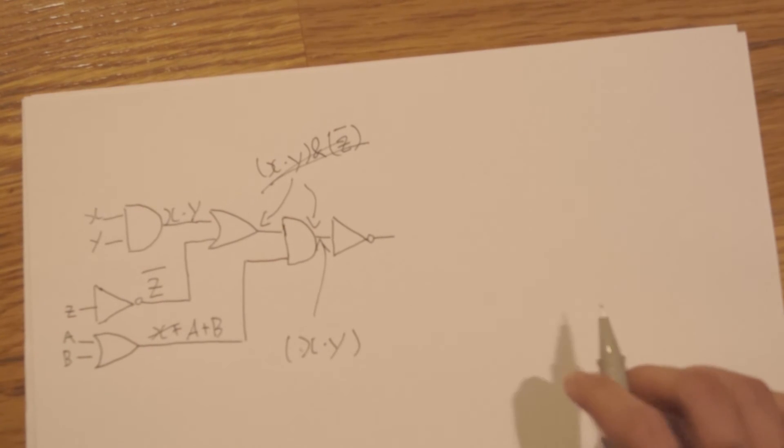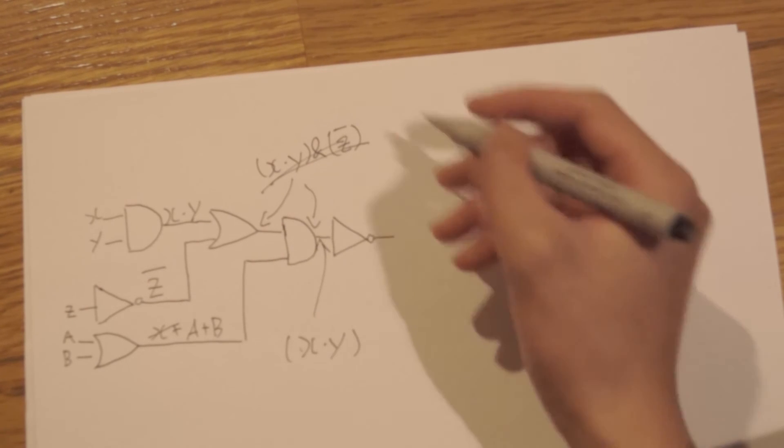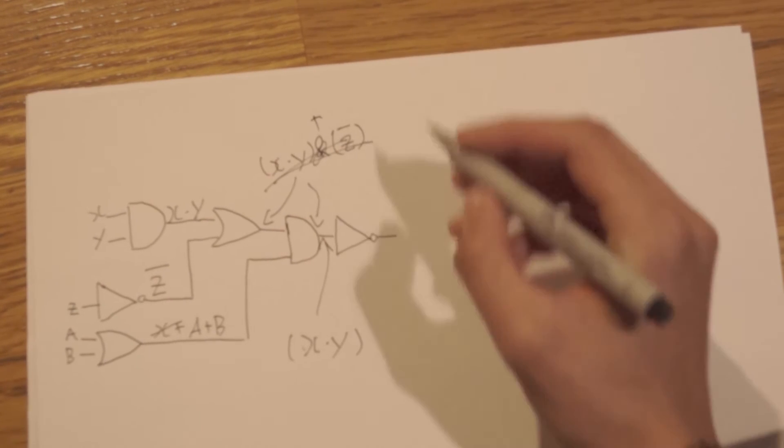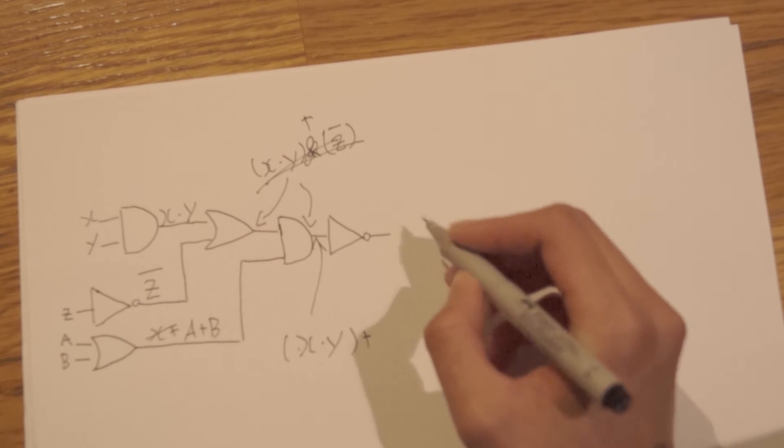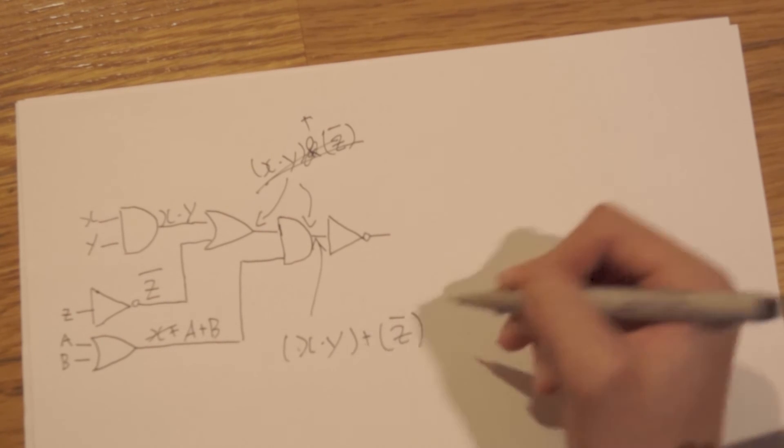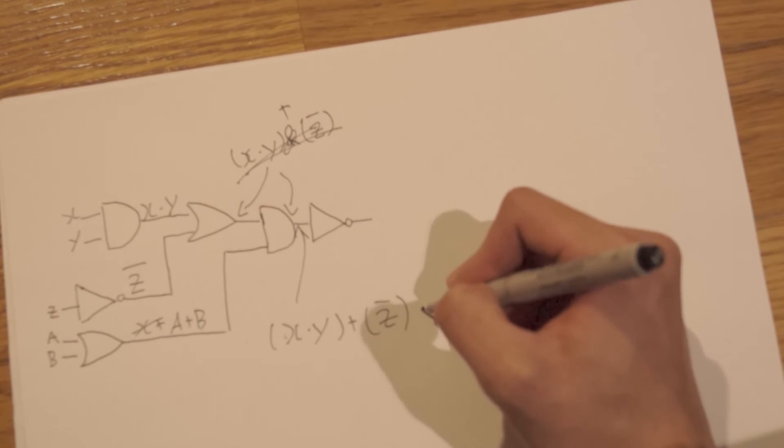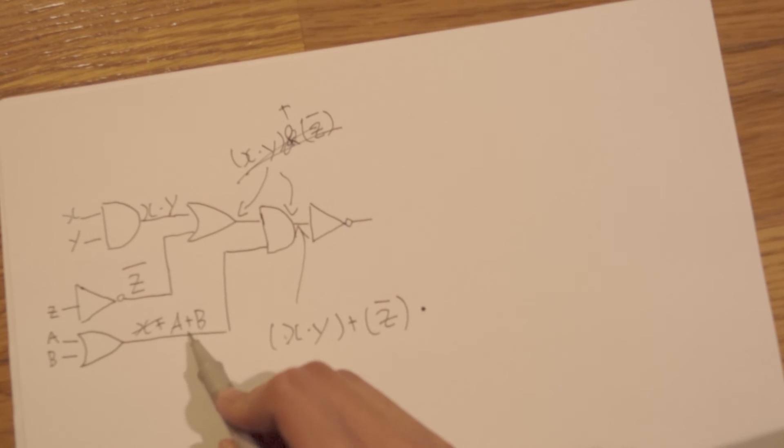This is actually an OR, right? Okay, so let's cross that out and do a plus. So plus, and then we can put z in brackets over z.